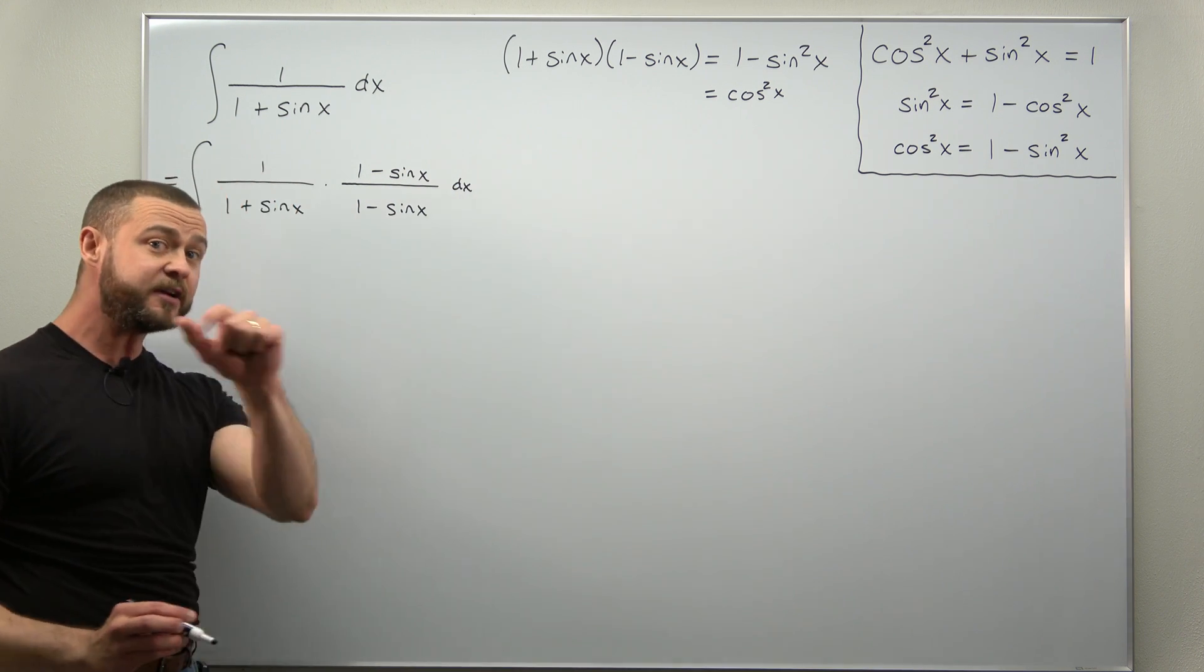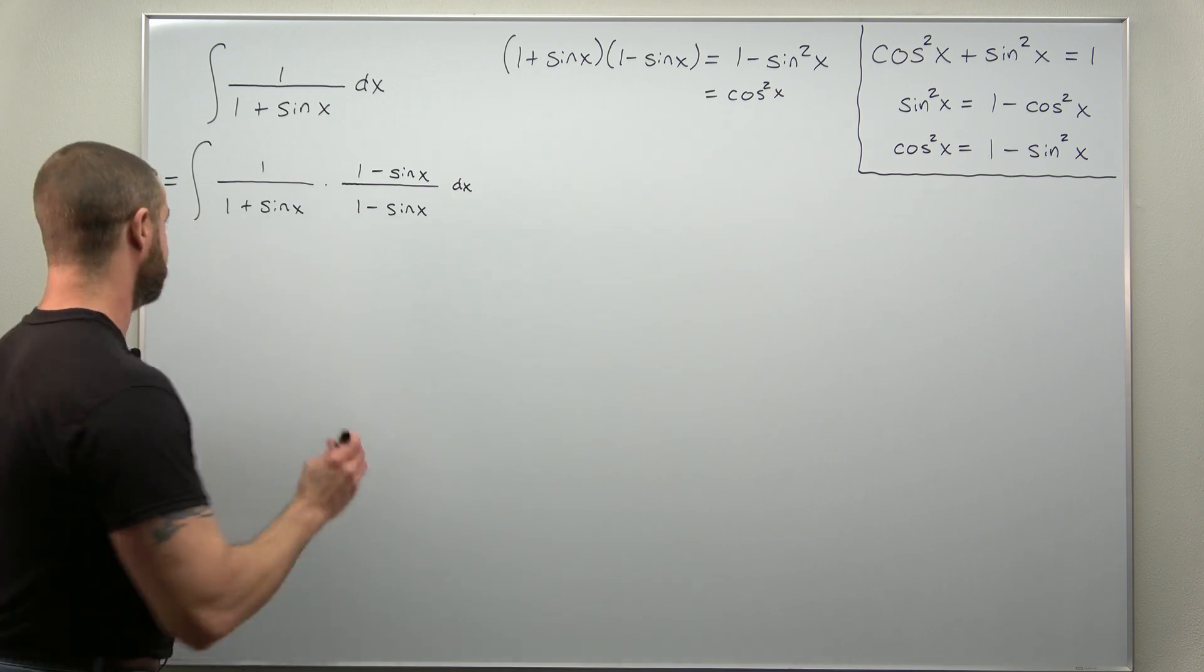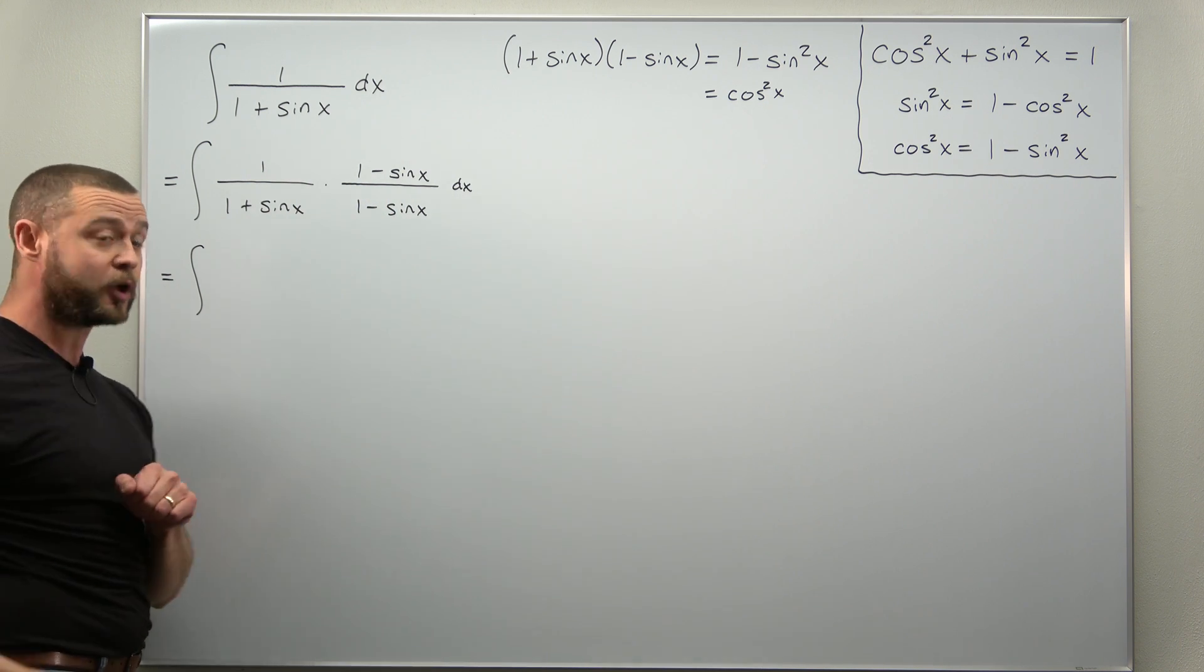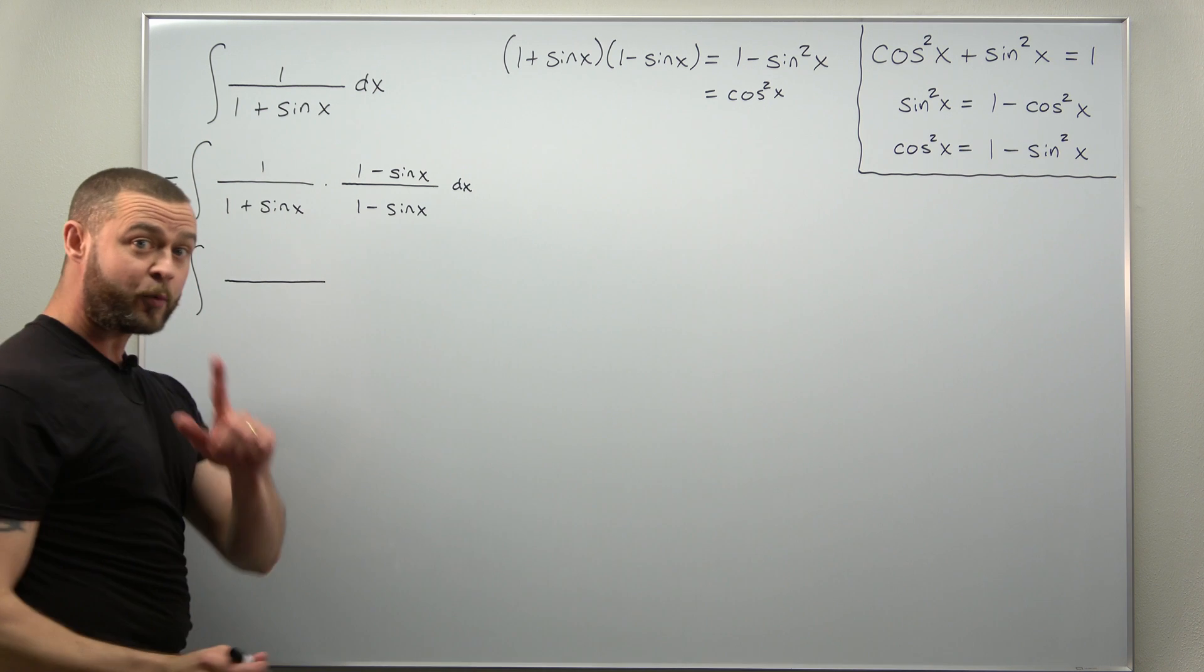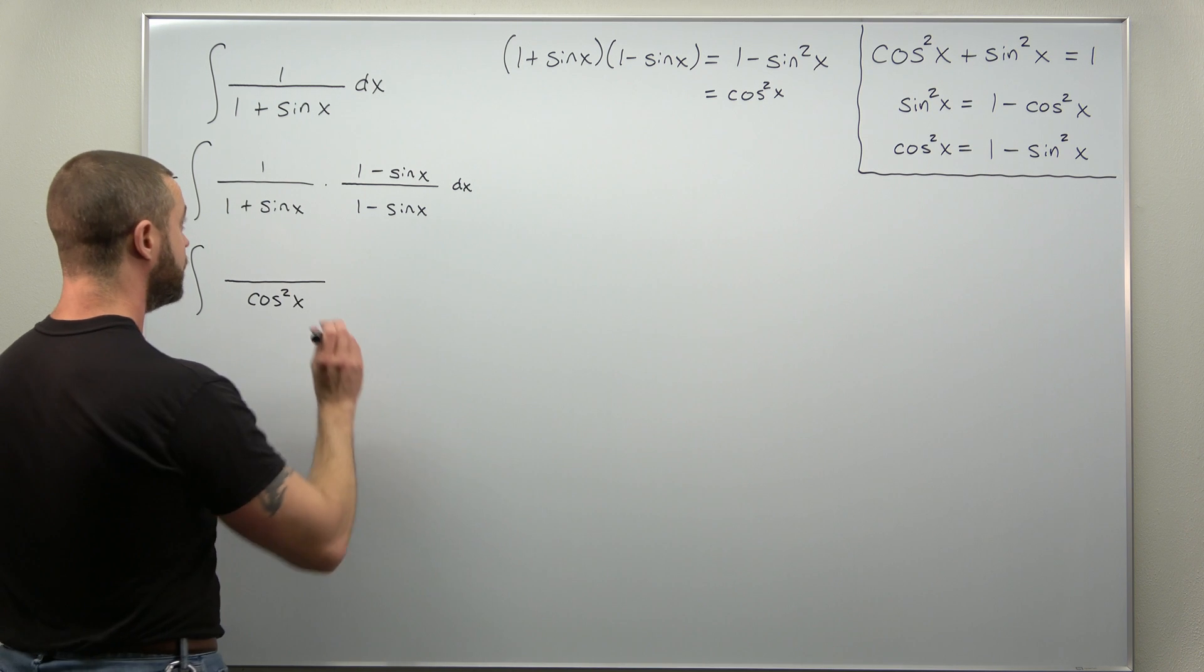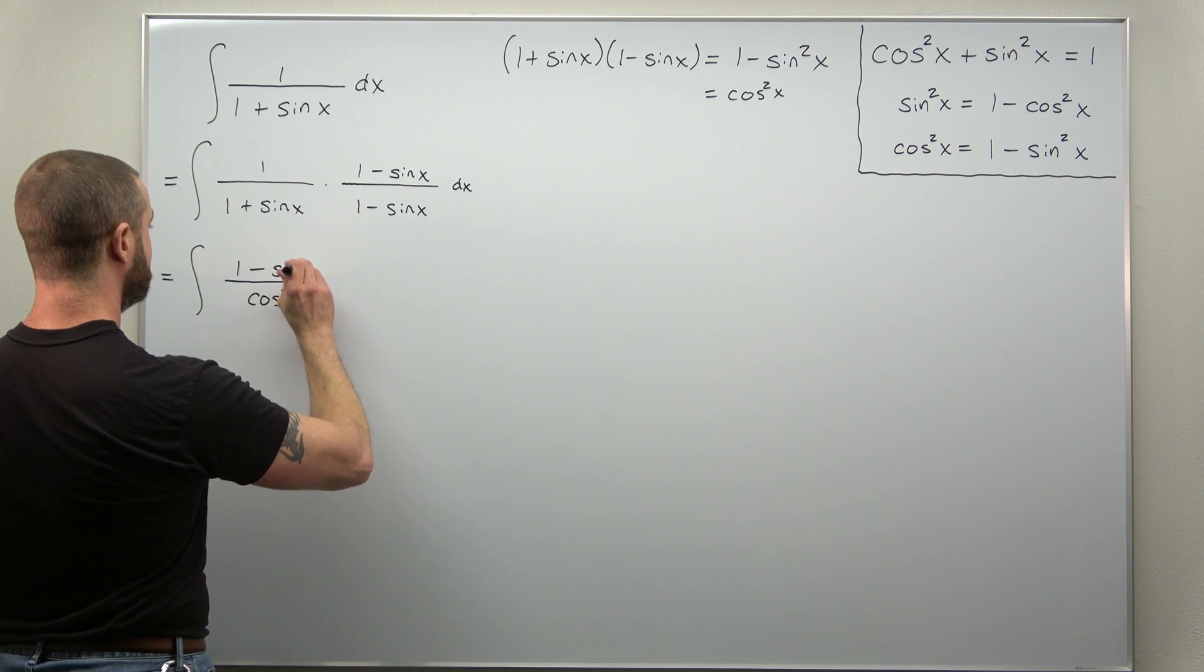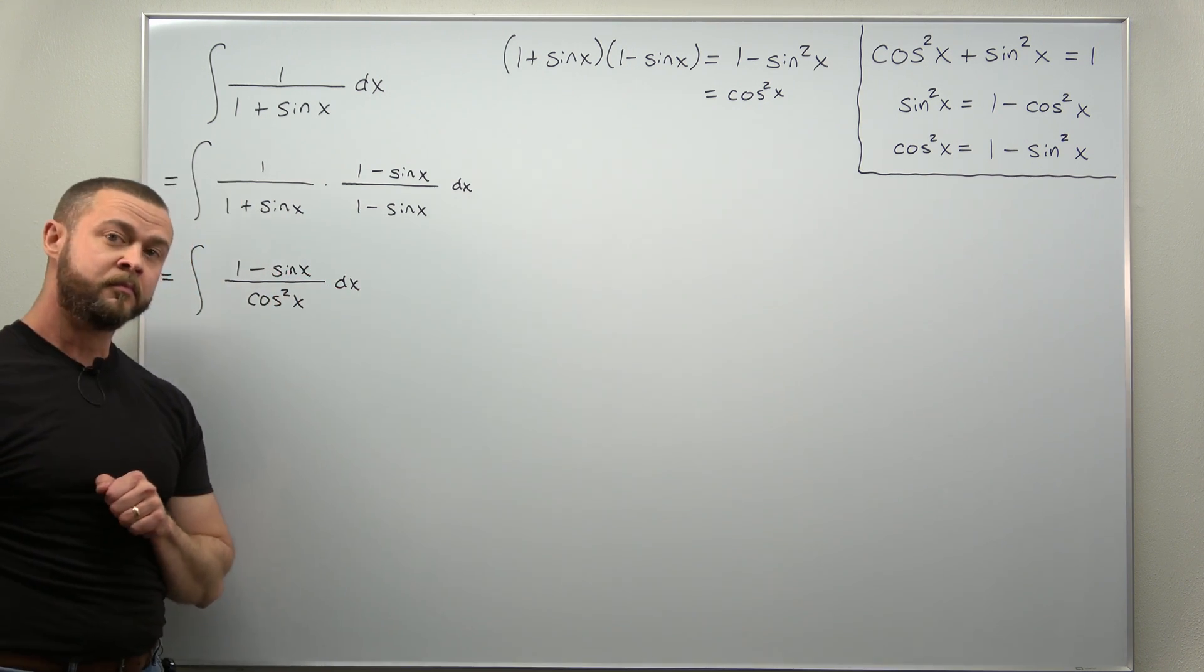And now we have a single term in our denominator which might allow us to use some basic results on fractions. So if we simplify this, the denominators when you expand or multiply them out will simplify with your Pythagorean identity to cosine squared of x. But we're still going to multiply the numerators. So here the numerator is 1 minus sine of x.